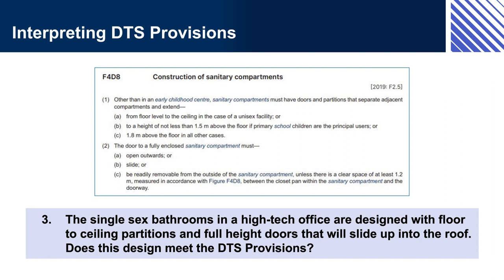Theoretically, a designer or builder could come up with other options to meet the performance requirements — for example, doors that slide away into the floor or ceiling. A designer or builder can also exceed these minimum requirements. For example, even though partitions and doors in single-sex bathrooms only need to be a minimum of 1.8 metres high, they can be designed to be full height, commonly 2.4 metres. Note that there is a clause (C) which describes how to comply with the performance requirements for an early childhood centre.